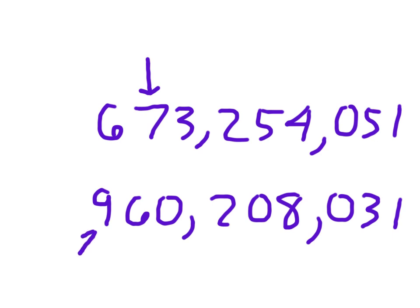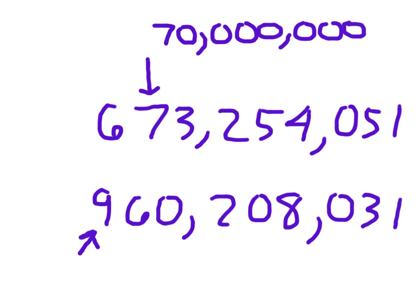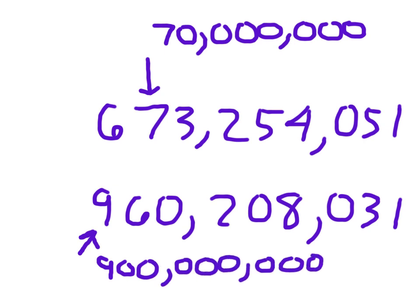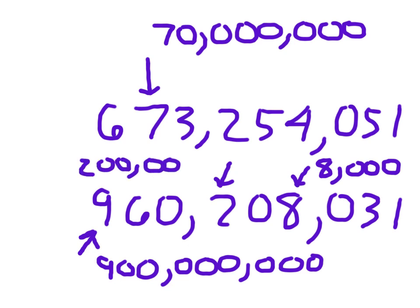It's hugely important with place value — it's just hugely important in math in general. What was that 7 worth? You're right: 70 million. Write that out for yourself. Go ahead and write out what those numbers are worth. That 9 is worth 900 million. That 8 was worth 8,000. This 2 is in the 100,000s place, so we have 200,000.